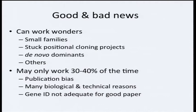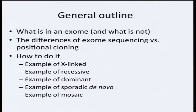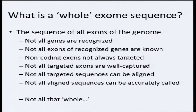It is not necessarily enough these days to do a gene identification by exome sequencing to get a good publication. Coupling your exome disease gene identification to additional genetic and functional data should help a lot. I'll give examples of five projects — some from our lab, some from others — covering different types: X-linked recessive, autosomal recessive, dominant, sporadic de novo, and a mosaic case.